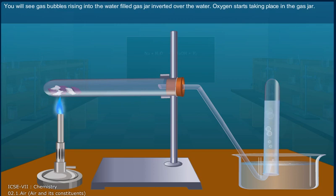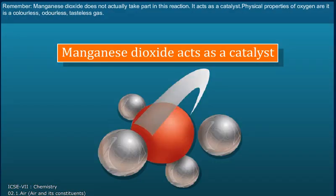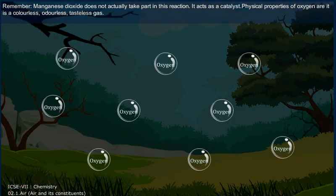Oxygen starts taking place in the gas jar. As oxygen fills more and more of the space in the gas jar, the level of water in it keeps falling. Oxygen is slightly heavier than air and it is collected by the downward displacement of water. Remember, manganese dioxide does not actually take part in this reaction.